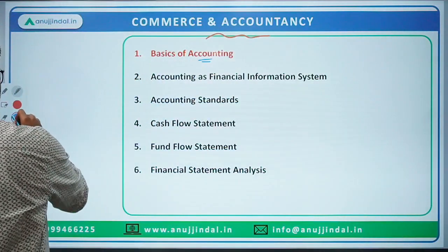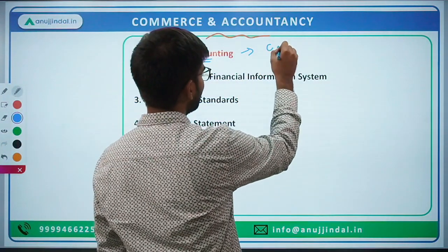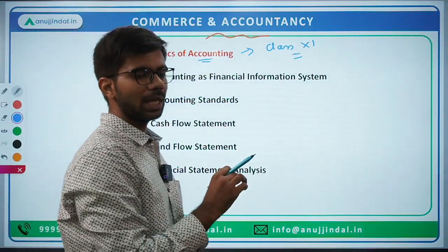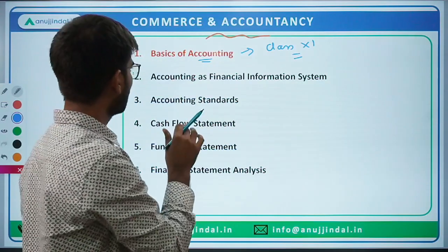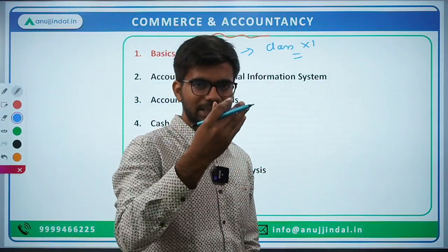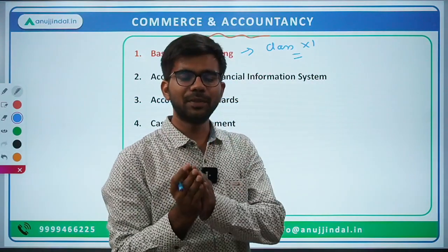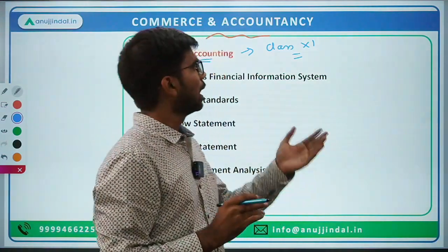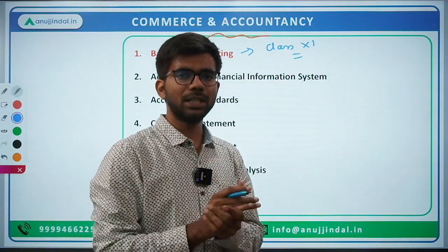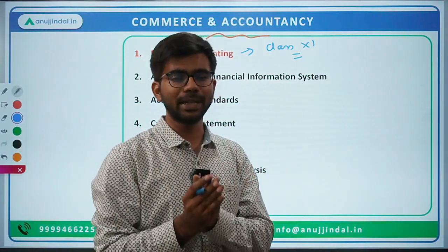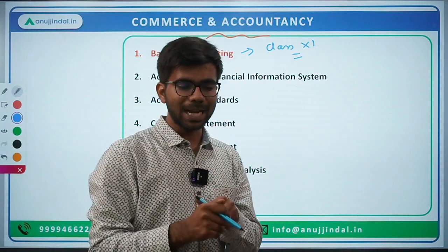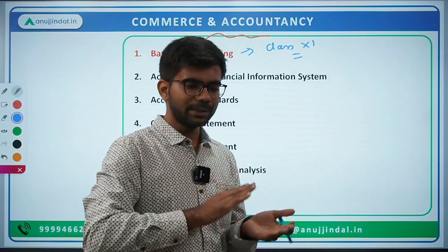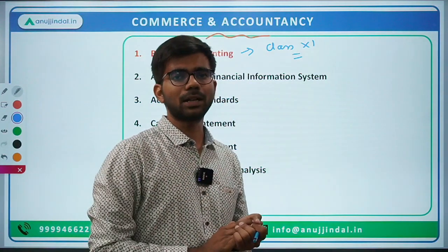First is basics of accounting. Looking at the class 11th textbook of accounting, there are many topics covered: basics of accounting, different steps in the accounting process, difference between accountancy, accounting and bookkeeping, how to post journal entries, the golden rules of debit and credit, posting to ledgers, how to make a trial balance, difference between provisions and reserves, depreciation, and the basic premises on which accounting is developed.